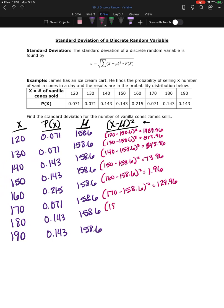180 minus 158.6 squared is 457.96 and finally 190 minus 158.6 squared is 985.96.